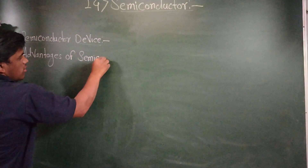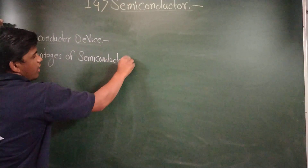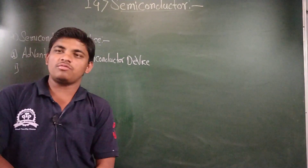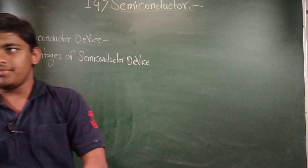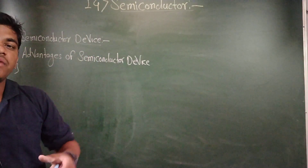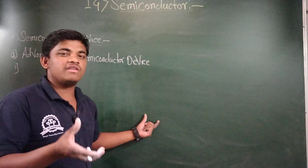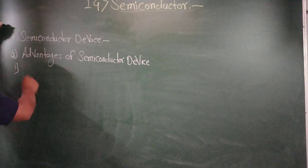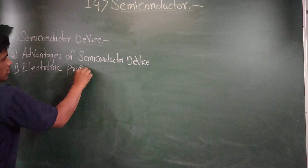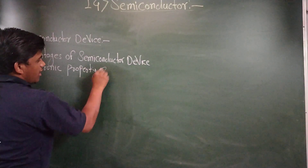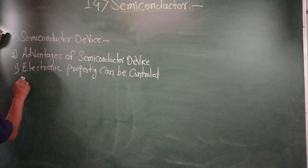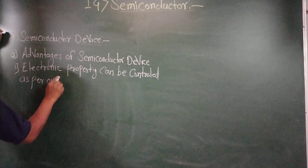We will discuss the advantages one by one. The first advantage is that the electronic property of semiconductor devices can be controlled as per our requirement. The electronic property — such as current and resistance — can be controlled the same as the previous system, and we can control it as per our requirements.